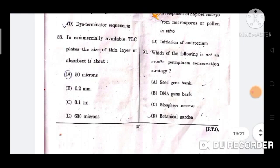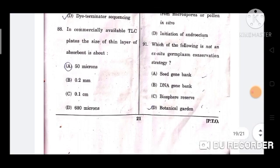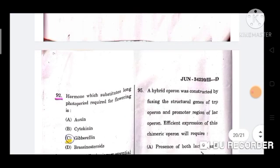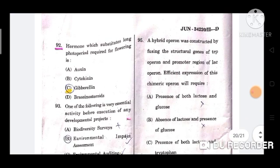Question number 91: Which of the following is not an ex situ germ plasm conservation strategy? The option is C, biosphere reserve. Next question, question number 92: Hormone which substitutes long photoperiod required for flowering is? Option C, gibberellin.